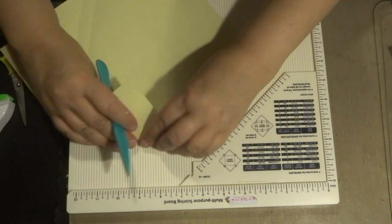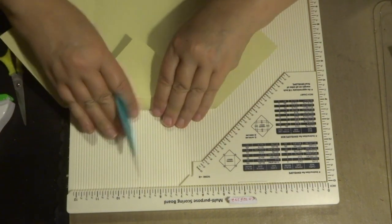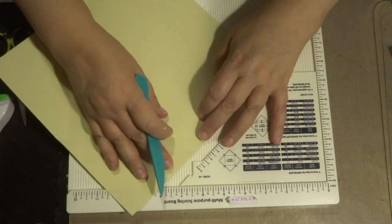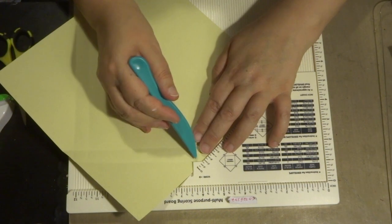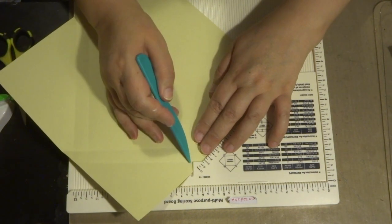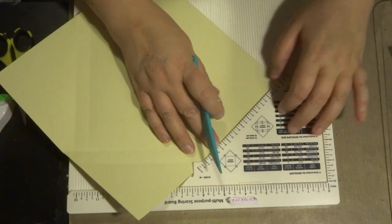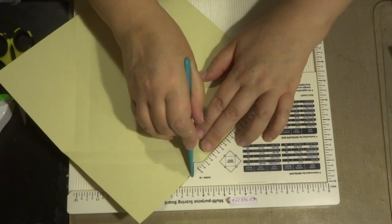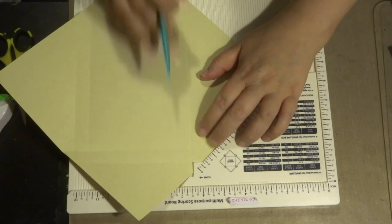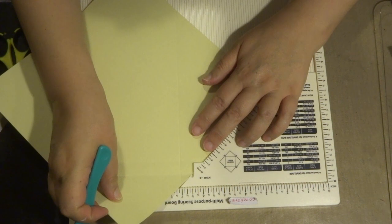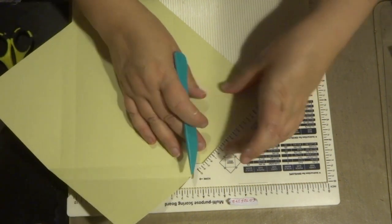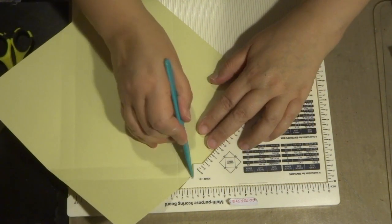Turning it around there's a score line there and a score line there. Again lining up that right angle with that bottom score line and then score away. And again making sure your paper's all lined up.